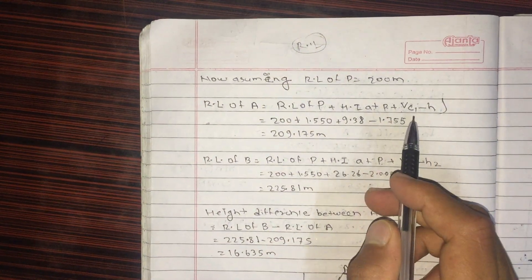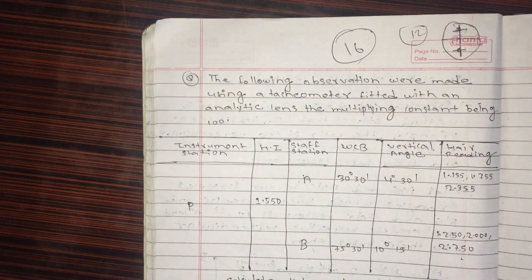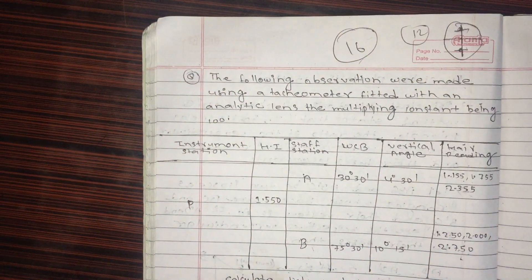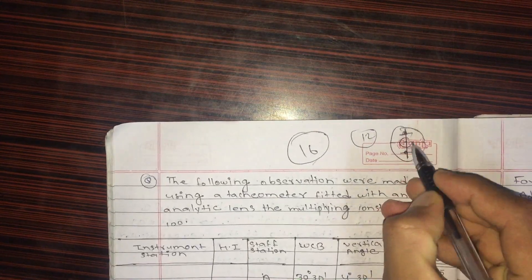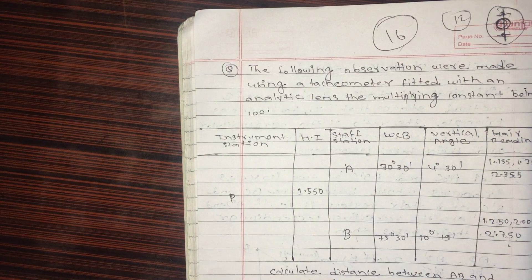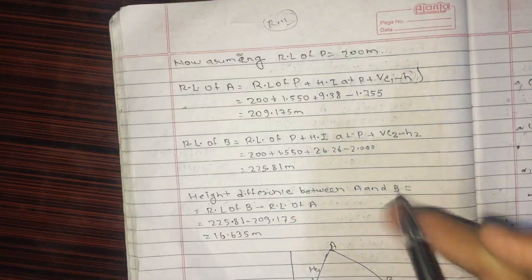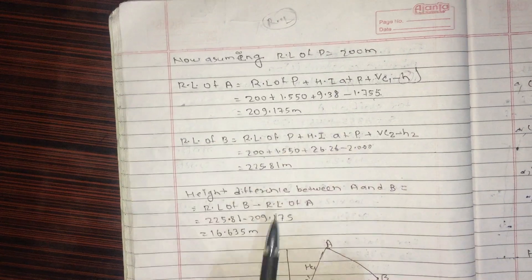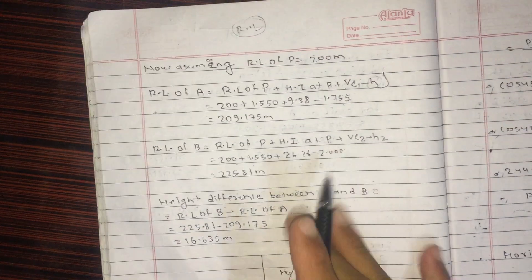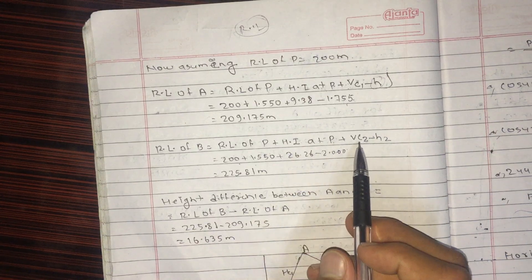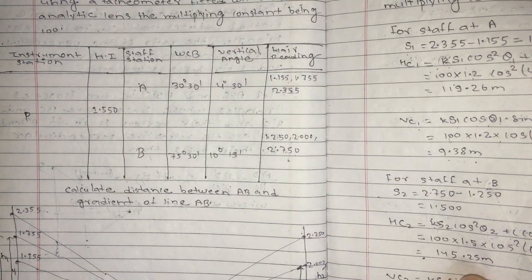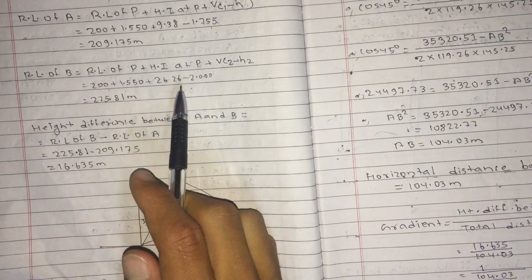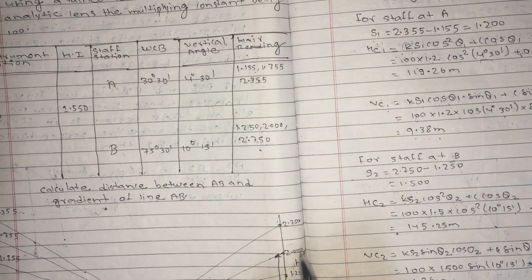Height of instrument is established. Vertical distance B-C1 is calculated. Height of instrument is 1.50. The vertical distance gives 26.26. Subtracting gives the difference.